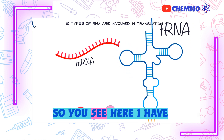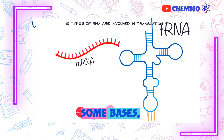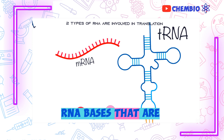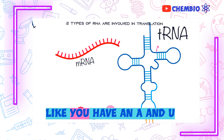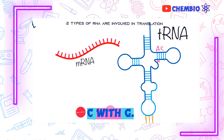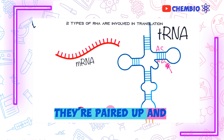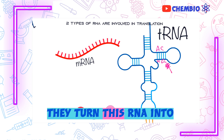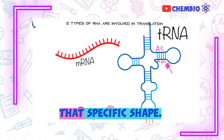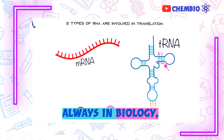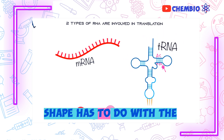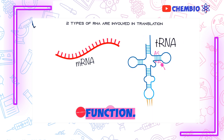The looping and folding of transfer RNA occurs because of some base pairing. You can see RNA bases paired up with each other — A with U, C with G — and they turn this RNA into that specific clover shape. And always in biology, the structure or shape has to do with the function.